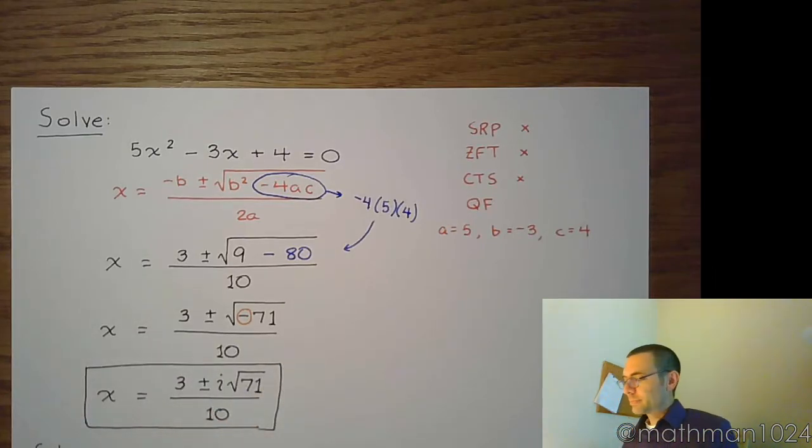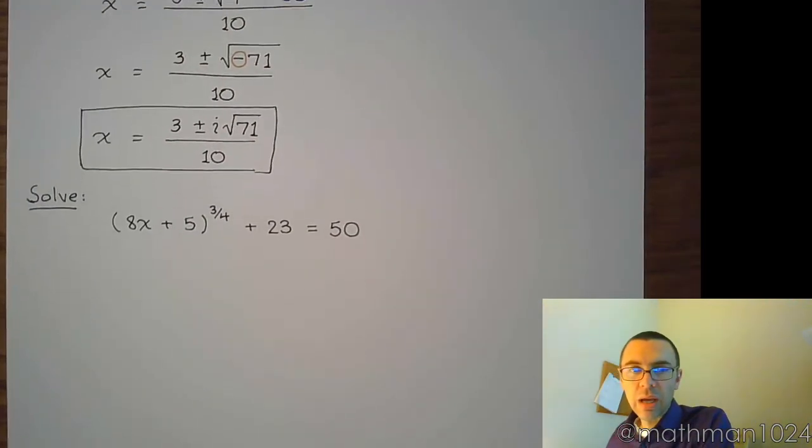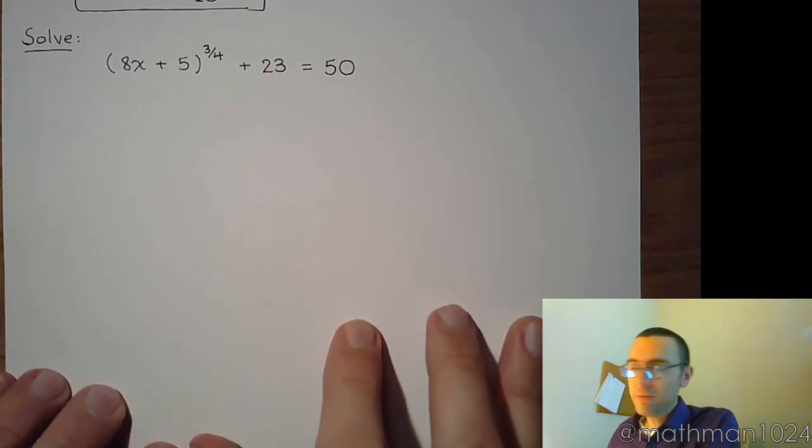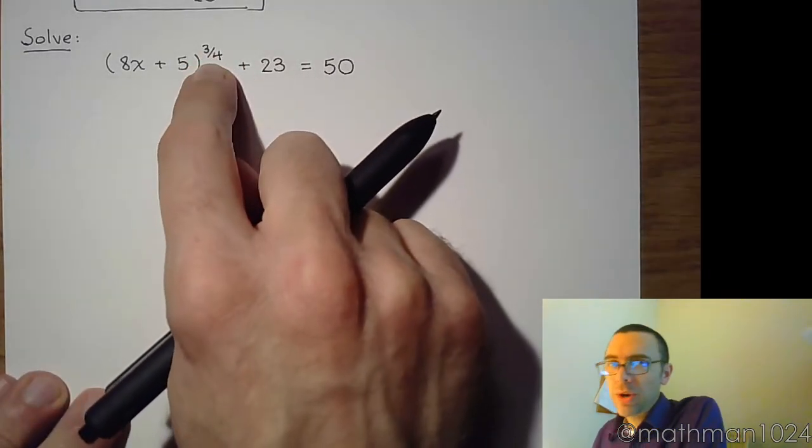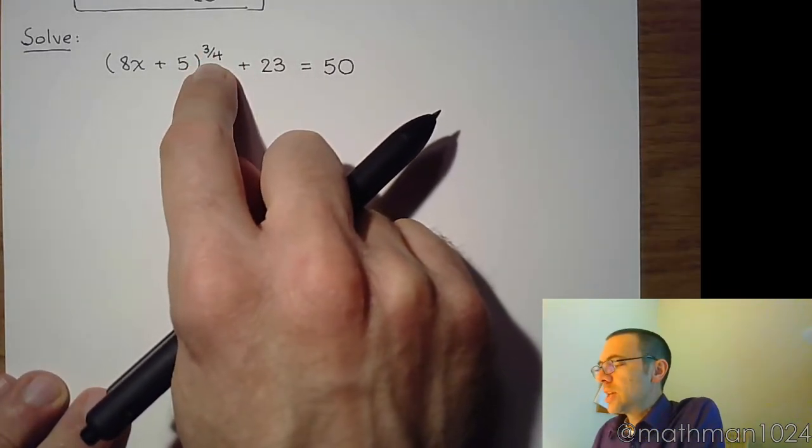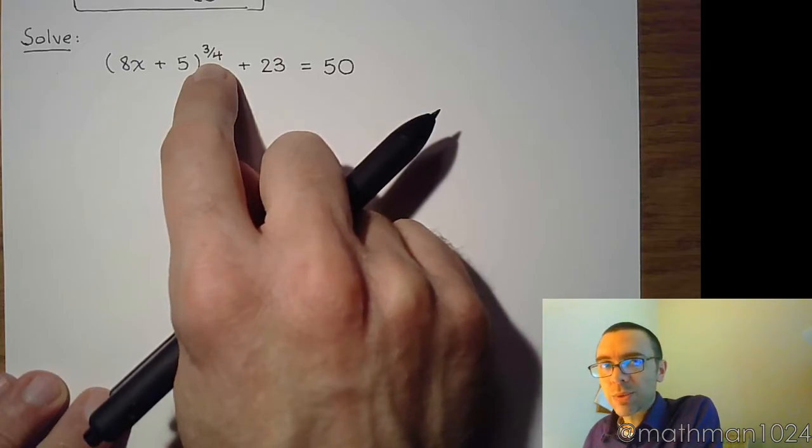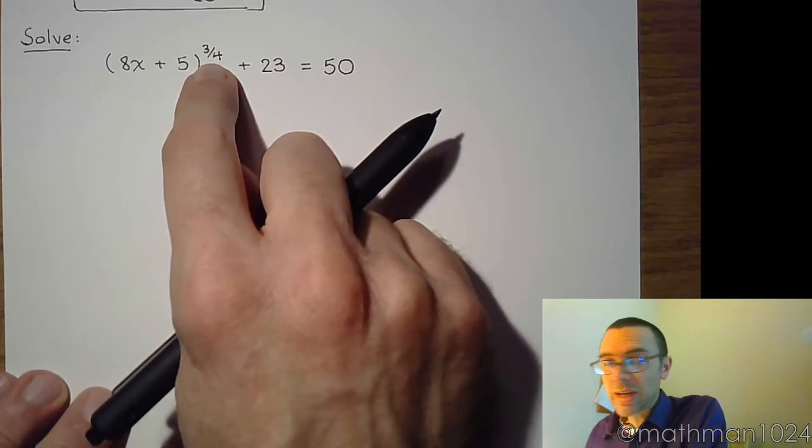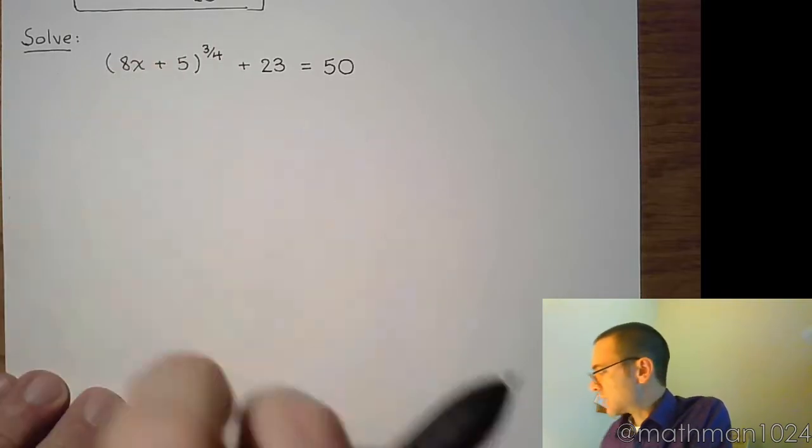All right. Let's do one more. Here we only have x in one spot. So how bad can it be? You've got this power here, which is a fraction. So it typically means we're going to be using the power property. But before I can do that, I need to get this expression by itself.